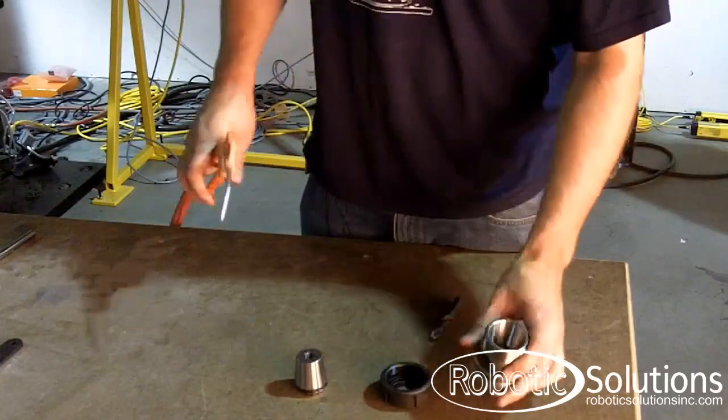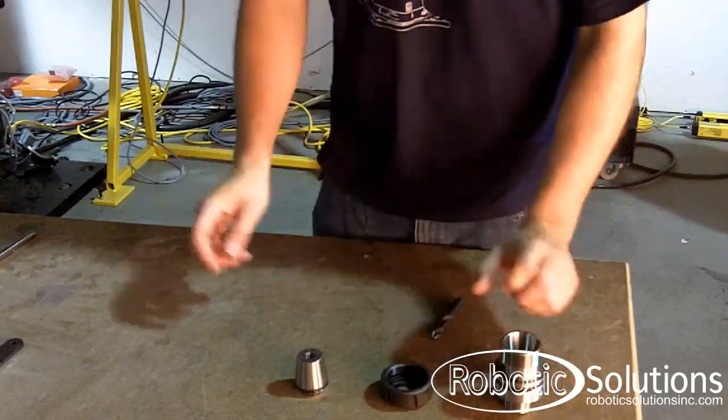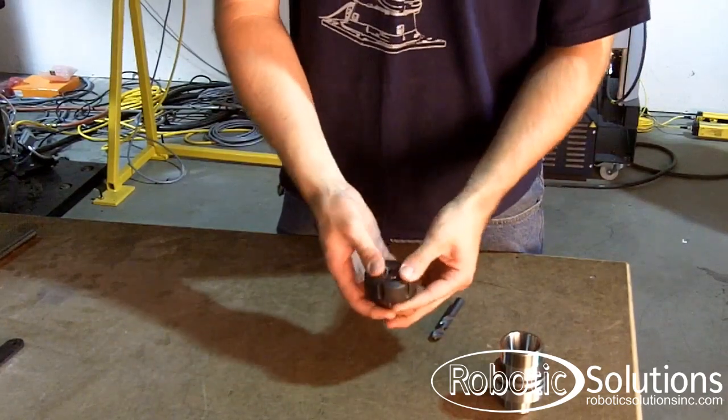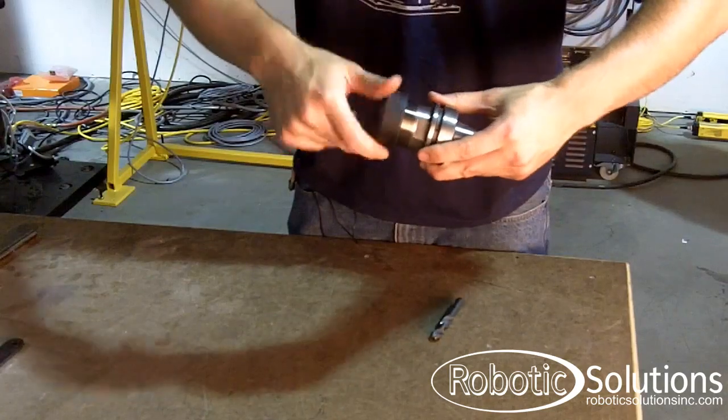Now you reassemble everything. First, you place the collet inside the nut. Place the nut assembly inside the holder.